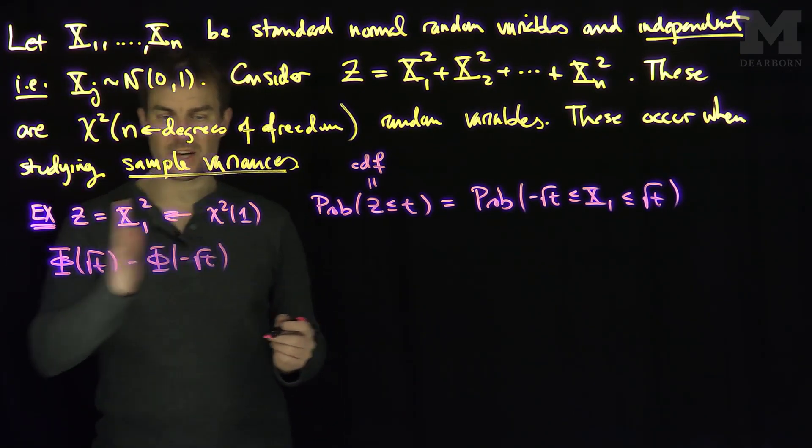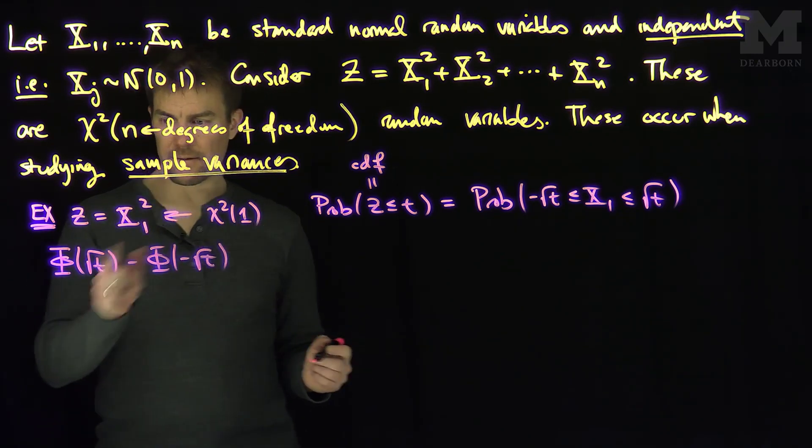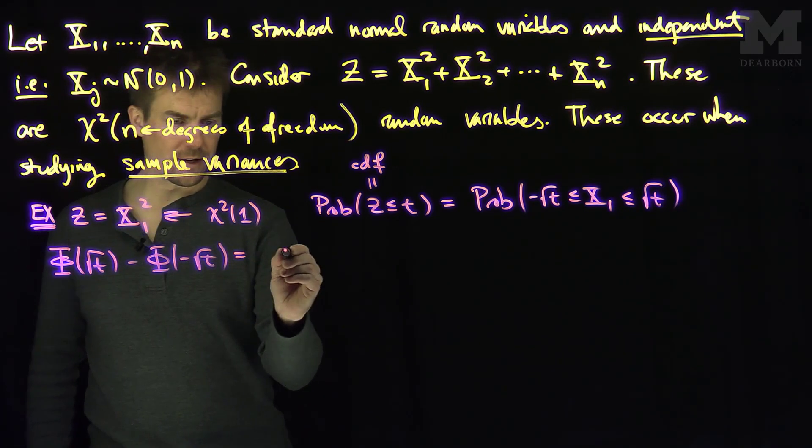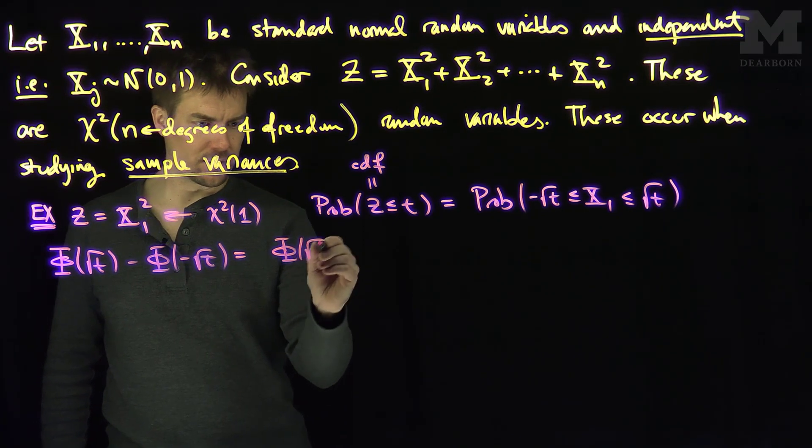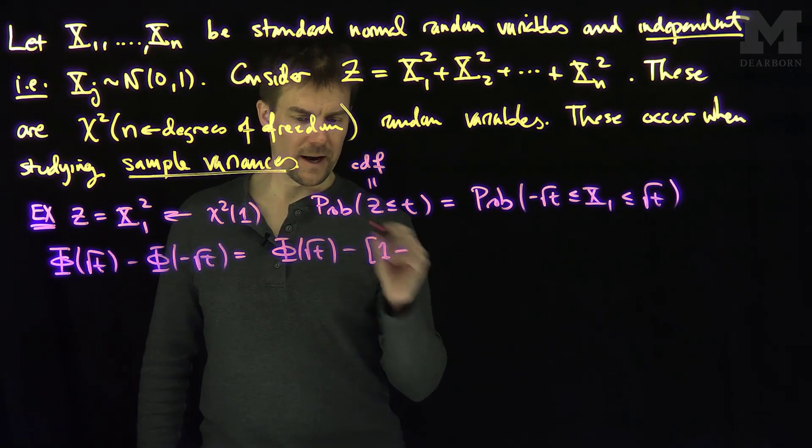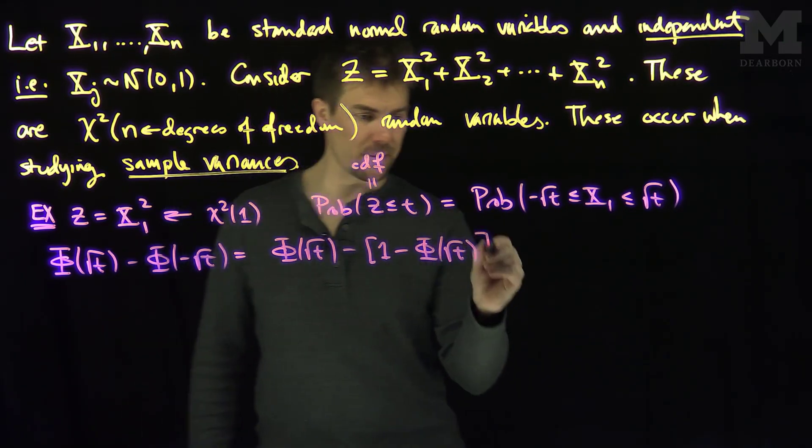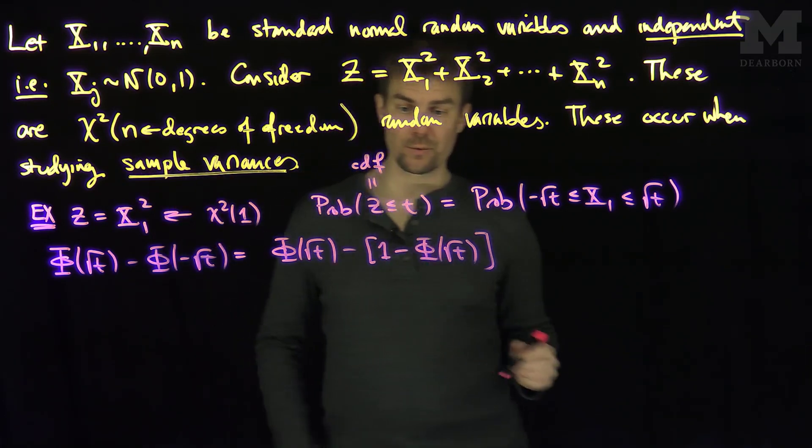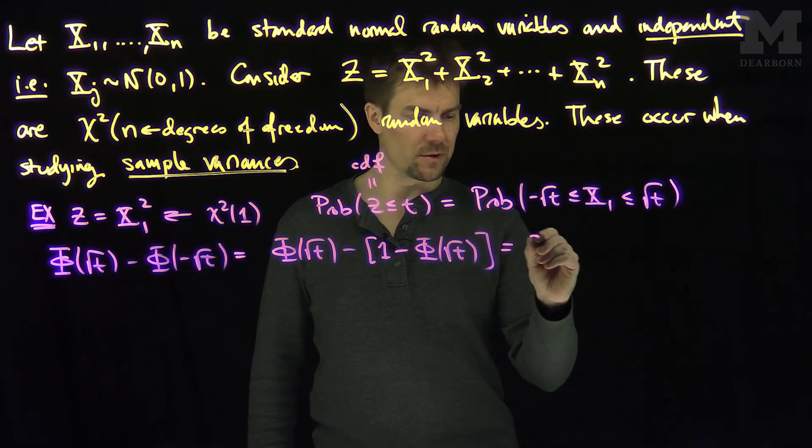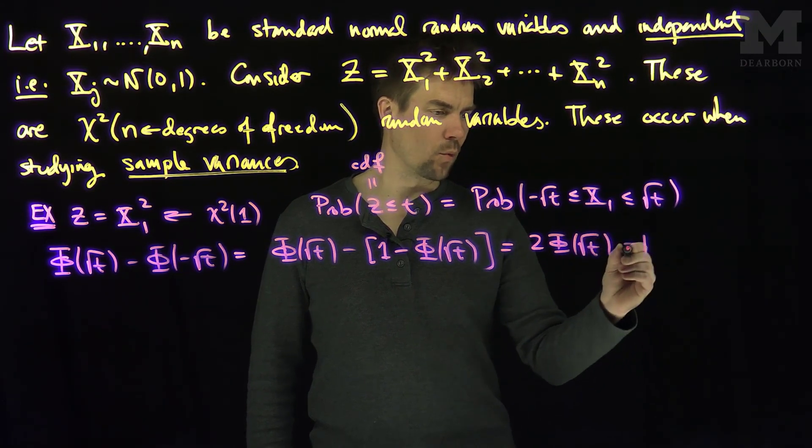Well, of course, this CDF of a negative root t is one minus the phi of root t. So, I can write this as phi of root t minus one minus phi of root t, because that's the same thing as the other tail. It's a symmetric distribution, so this is true.